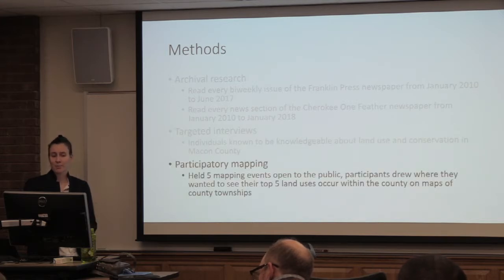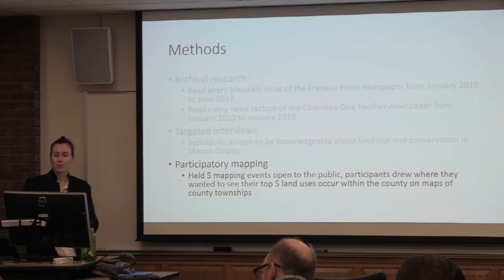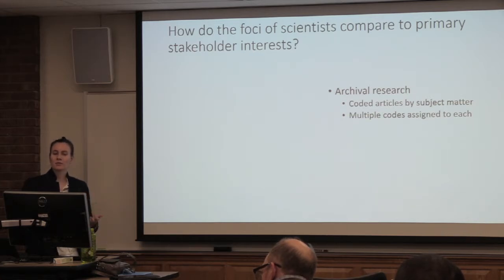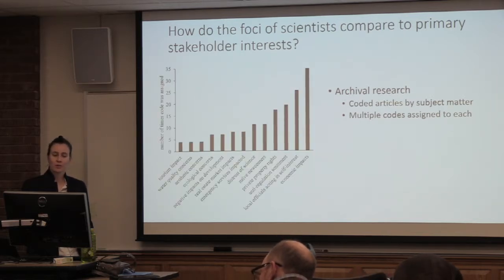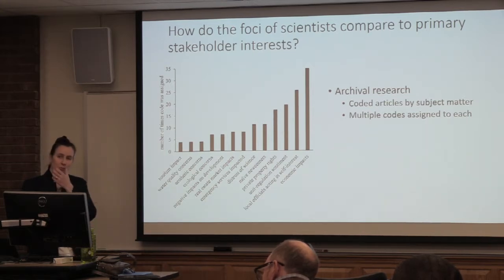I also conducted targeted interviews with individuals in the county known to be knowledgeable about land use and conservation. And I did a participatory mapping study — five mapping events open to the public where participants drew on maps where in the spatial landscape they wanted to see their top five land uses occur. I'm trying to say: how did the foci of scientists compare to the primary stakeholder interests? We coded articles by subject matter. What emerged is that economic impacts are by far what stakeholders are concerned about, much more so than ecological concerns or water quality.